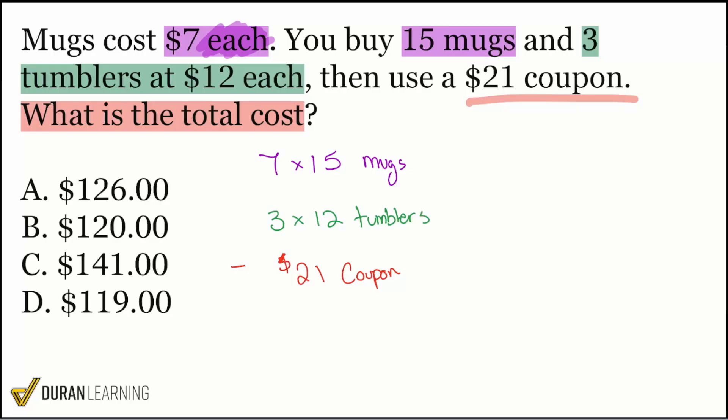Let's calculate. Seven multiplied by 15: seven times 10 is 70, seven times 5 is 35, so 70 plus 35 is 105. Then we have 3 times 12 which is 36. Lastly we subtract the 21 dollars. So that's 105 plus 36 minus 21.